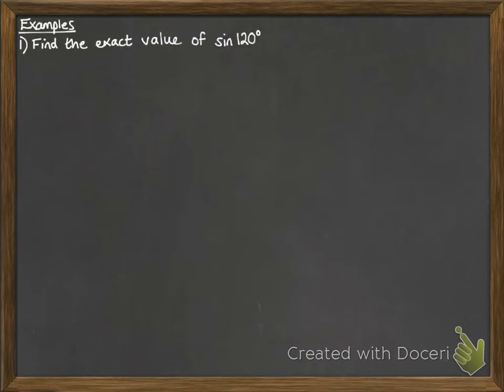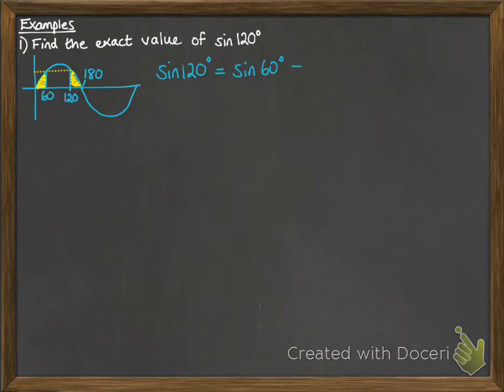Some examples then. We want to find the exact value of sine of 120 degrees. So looking at our graph of sine, it goes through the x-axis at 180, there's 120, so that will match up with, using the symmetry of the graph, 60 degrees. So we want to find sine of 60, which from our table before, is root 3 over 2, and if you can't remember the table, you can quickly sketch out one of those triangles to the side to figure it out.